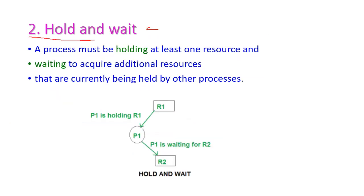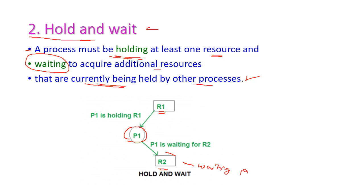The second condition is hold and wait. Here, a process must be holding at least one resource and, at the same time, waiting to acquire additional resources that are currently being held by some other processes. For example, process P1 is already holding resource R1 but is waiting for R2, and R2 may already be assigned to some other process P2. This situation is called hold and wait.